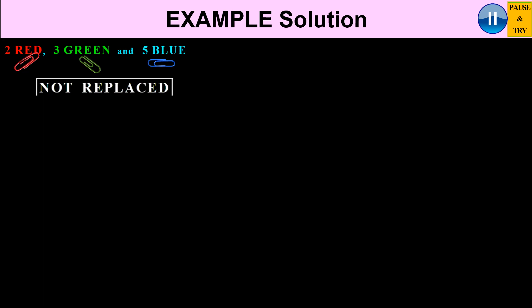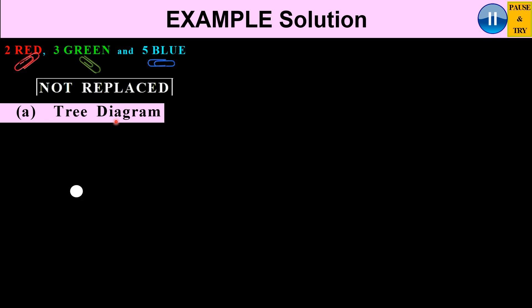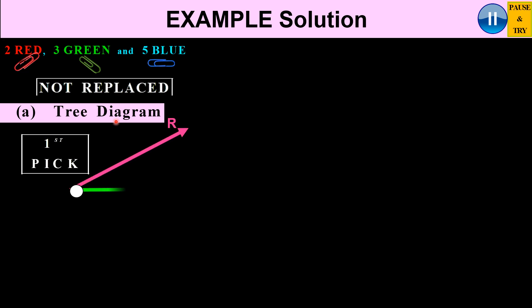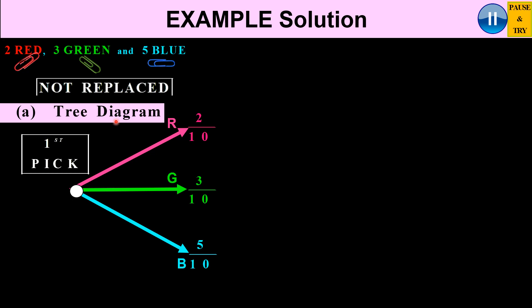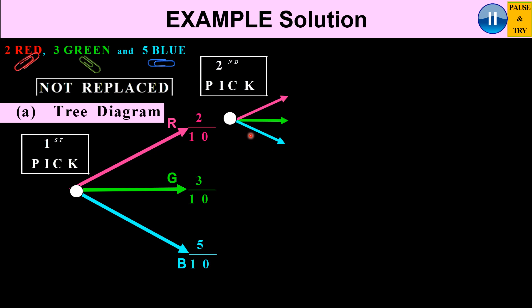We have two red, three green, and five blue, with no replacement. For the first pick we can pick red, green, or blue with probabilities 2 over 10, 3 over 10, and 5 over 10. But now there is no replacement — so once you take out a red, you started with 10 paper clips and now have one less. For the second pick, you can still get red, green, or blue, but the probabilities change depending on what was picked first.